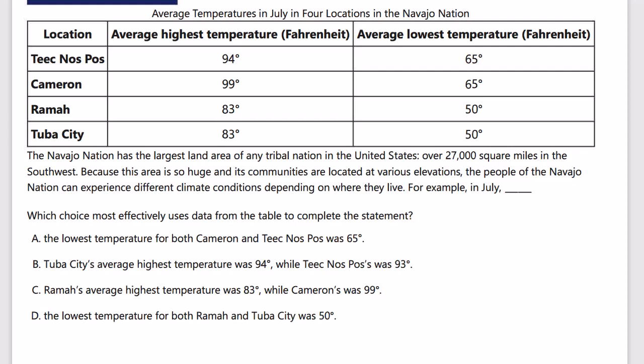This is a 'command of evidence quantitative' question where we have to complete a statement using data from a table. The passage states the Navajo Nation has the largest land area of any tribal nation in the United States — over 27,000 square miles in the southwest. Because this area is so huge and its communities are at various elevations, people can experience different climate conditions depending on where they live. For example, in July — and we want to show those different climate conditions.